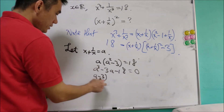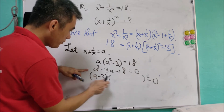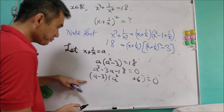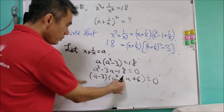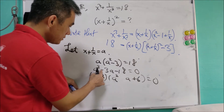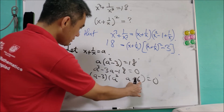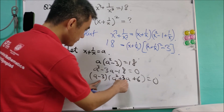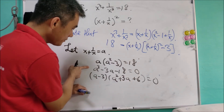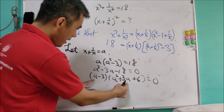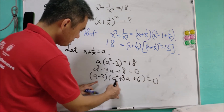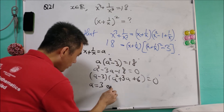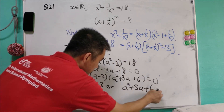Since a minus 3 is a factor of a cubed minus 3a minus 18, we perform polynomial division to get a squared plus 3a plus 6 as the other factor. We verify: the coefficient of a squared from expanding (a minus 3)(a squared plus 3a + 6) gives 3 minus 3 equals 0, which is correct. So a equals 3, or a squared plus 3a plus 6 equals 0.